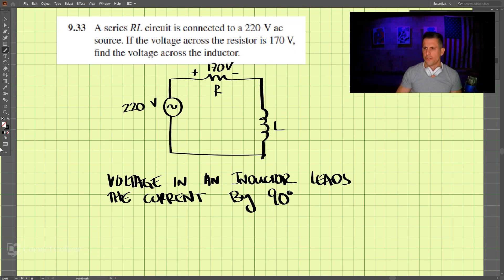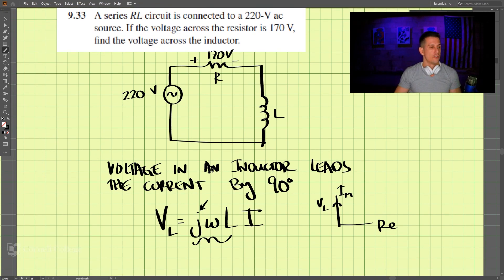When we talk about the voltage in an inductor, VL is equal to jωL times I, where this value here is the impedance. It's in the j direction, so if we have the real and imaginary axis, the voltage VL is in the imaginary direction. Let's take a look.